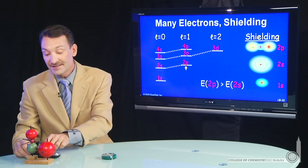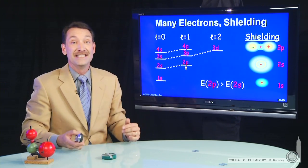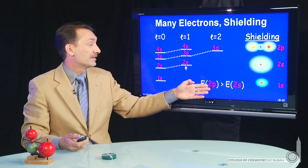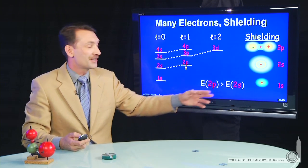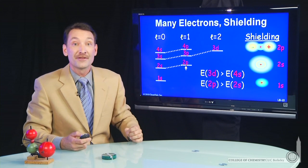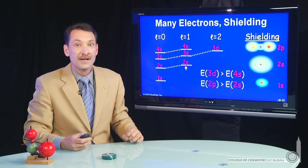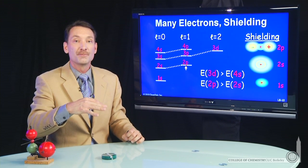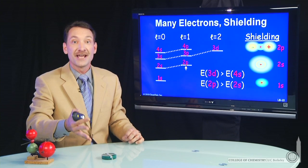But s electrons are great shielders of p and d electrons. So you get 2p energies that are higher than 2s, and you get d energies that are even higher than 4s. So let's look at ionization energies more carefully and see if we can understand this phenomena.